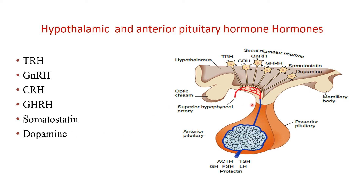Once these neurons secrete their content into the primary plexus, they are carried by the portal vessel to the cells of the pituitary gland. Depending on which hormone is released, the pituitary gland releases different hormones. TSH and LH are released when stimulated by GnRH, and these go to the gonads — ovaries and testes.